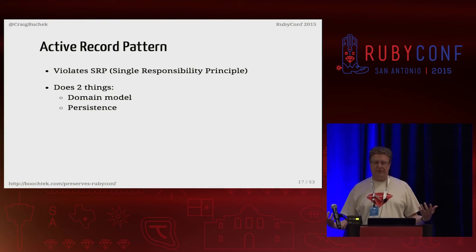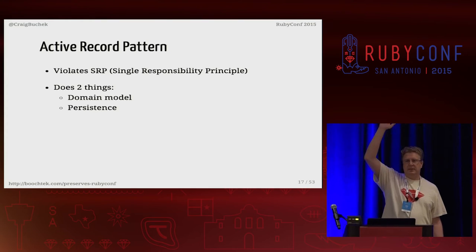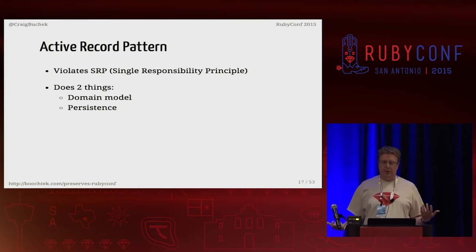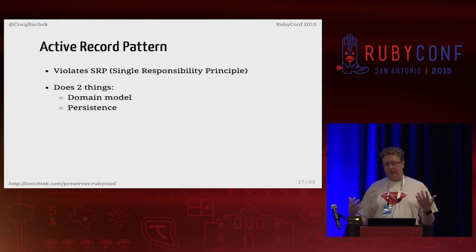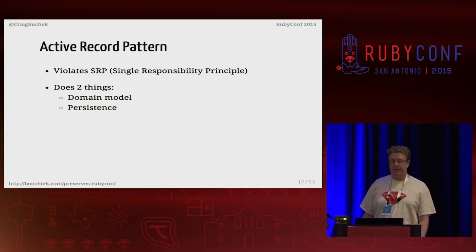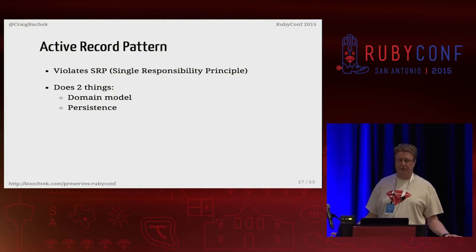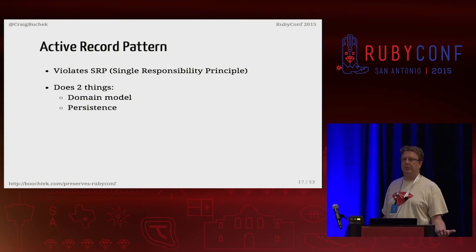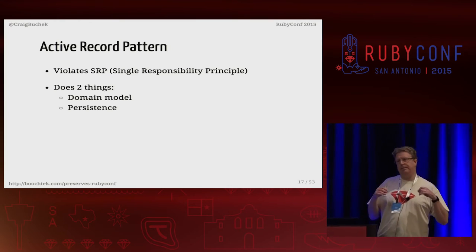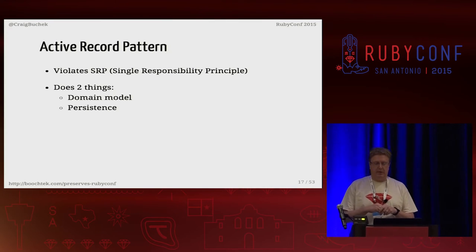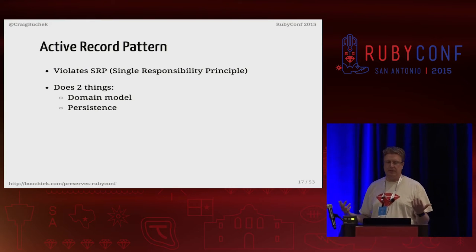MVC is about separation of concerns. Your model contains your domain logic, your controllers handle web requests and responses, and your views handle output. Separation of concerns is closely related to the single responsibility principle, which says things that need to change at the same time should be together. My biggest problem with ActiveRecord is it encourages bad engineering habits — mostly by violating the single responsibility principle — which makes it harder to test your main logic without testing the database too.